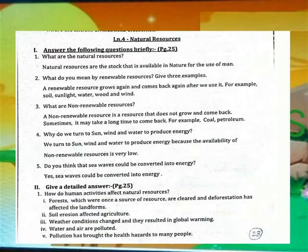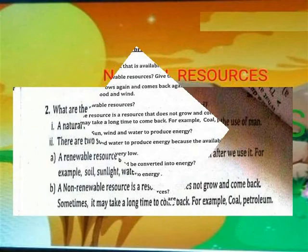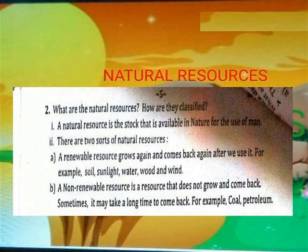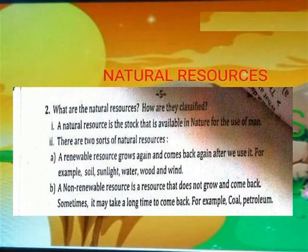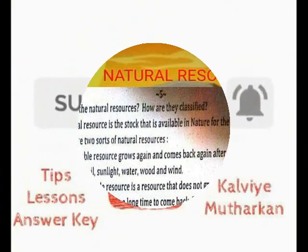What are Natural Resources? How are they classified? Natural Resources are the stock available in nature for the use of mankind. There are two sorts of Natural Resources. 1. Renewable Resources grow again and come back again after use, for example: forests, water, and wood. 2. Non-Renewable Resources are resources that don't grow and come back; sometimes it may take a long time to come back, for example: minerals and fossil fuels.